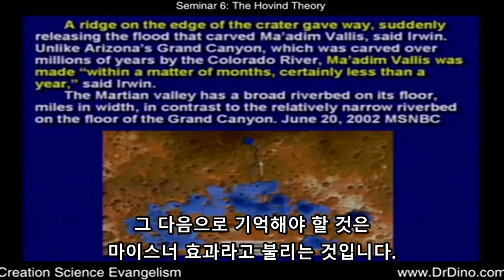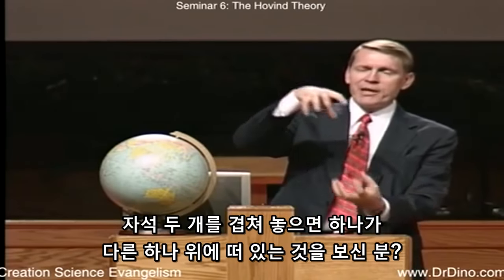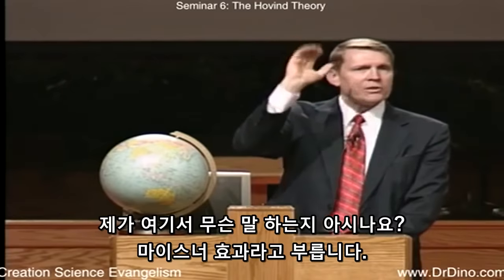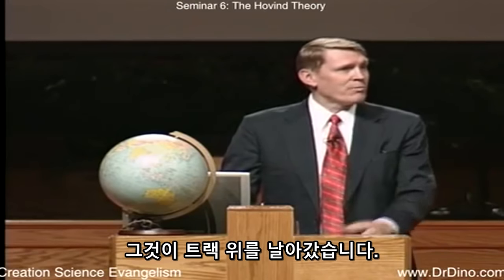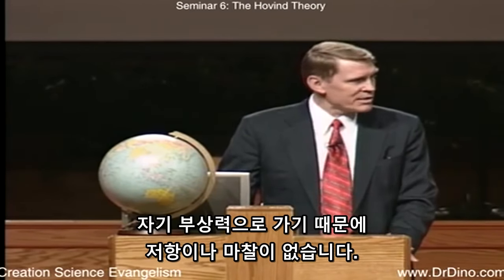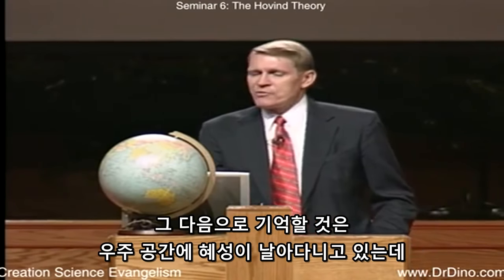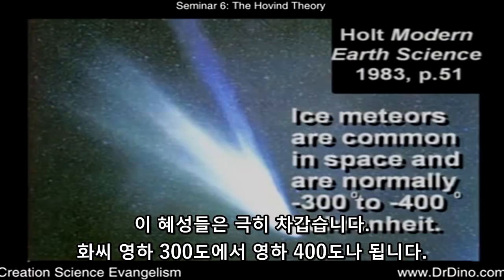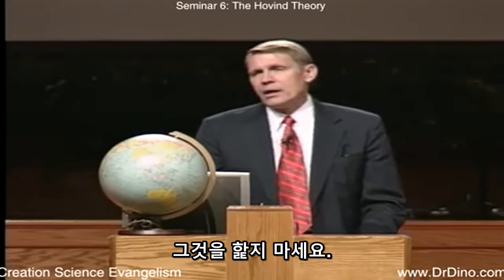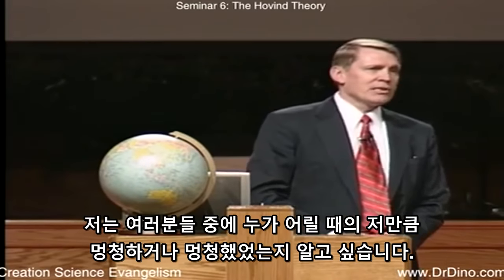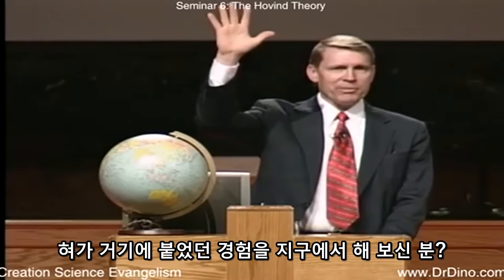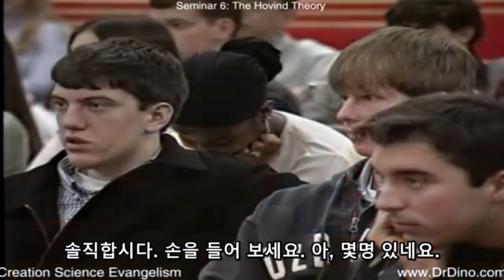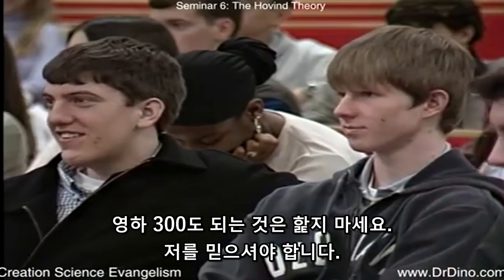Next is the Meissner effect — two magnets put together where one floats on top of the other. That's how Japanese maglev trains work — magnetic levitation with no friction. Also, comets flying through space are extremely cold — 300 to 400 degrees below zero Fahrenheit. If you throw a snowball too fast it will break apart; you couldn't shoot a snowball out of a cannon. So a super-cold ice meteor coming toward the earth would build up speed due to the inverse square law, and as it got going faster and faster, it would break up in space into a huge number of ice crystals, showering down on the earth as super-cold snow.